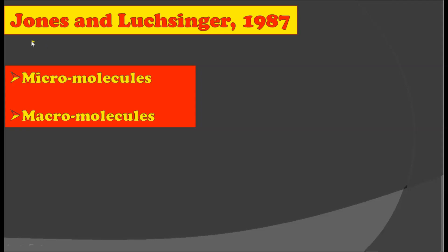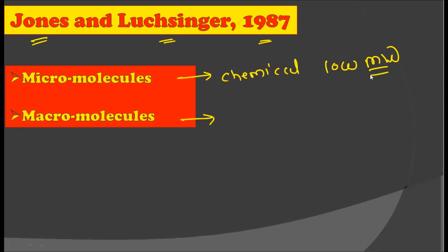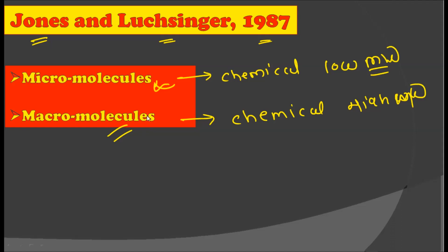There is a second type of classification given by Jones and Lutzinger in 1987, in which they classified biochemical molecules into micromolecules and macromolecules. Micromolecules are those chemicals which have low molecular weight, while macromolecules have high molecular weight. Depending upon this, they suggest we should classify the plants.